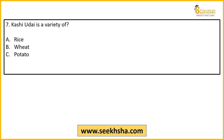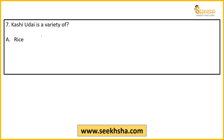Seventh question: Again a variety-based question. Kashi Uday — which crop is it a variety of? Options: A) rice, B) wheat, C) potato, D) tomato, E) peas. The right answer is E) peas — Kashi Uday is a variety of peas.